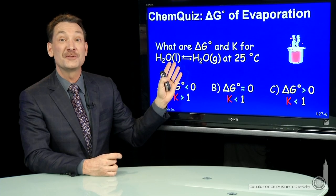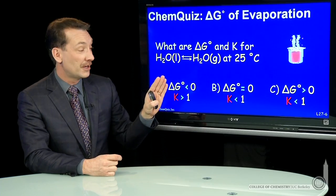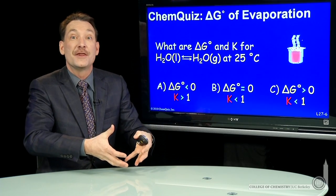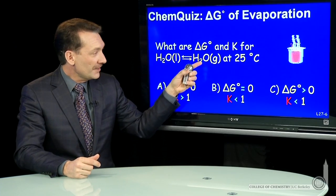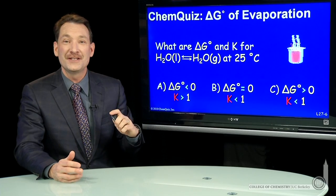That's the equilibrium situation at 100 degrees C, the boiling point of water. One atmosphere of pressure is the pressure that defines the boiling point. So I have one atmosphere of pressure. That's too high for 25 degrees C.